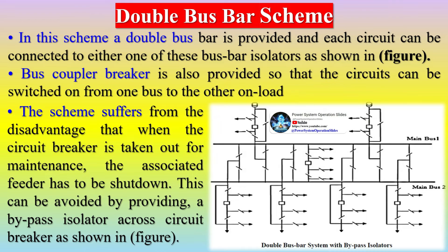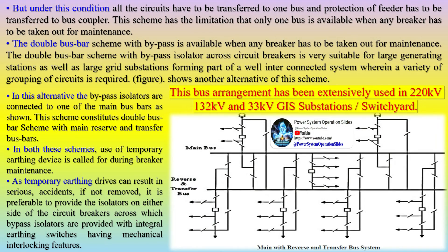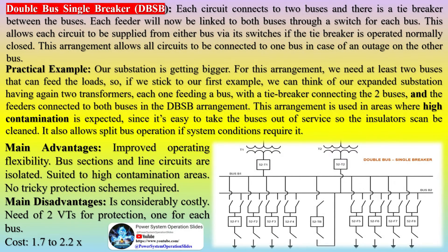In the double busbar scheme, a double busbar is provided and each circuit can be connected to either one of these busbars through isolators. A bus coupler breaker is also provided so that circuits can be switched from one bus to the other on load. The scheme suffers from the disadvantage that when a circuit breaker is taken out for maintenance, the associated feeder has to be shut down. This can be avoided by providing a bypass isolator across the circuit breaker. However, under this condition all circuits have to be transferred to one bus and protection of the feeder has to be transferred to the bus coupler. This scheme has the limitation that only one bus is available when any breaker has to be taken out for maintenance.